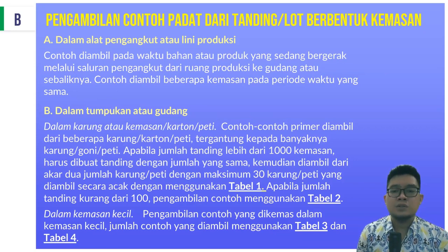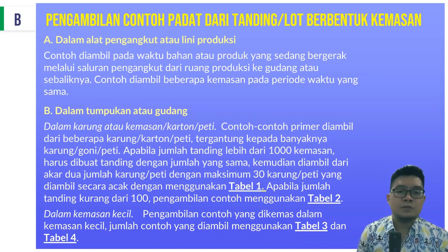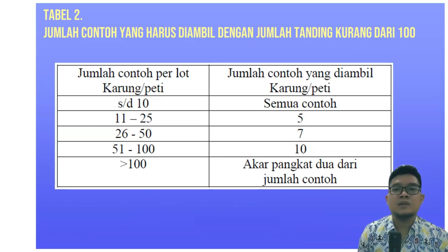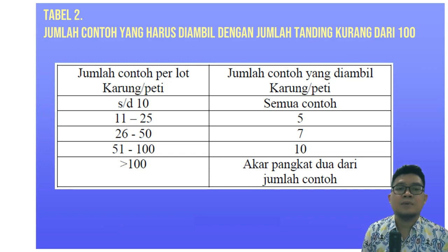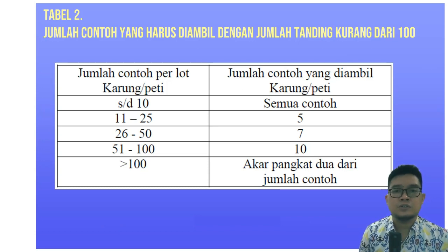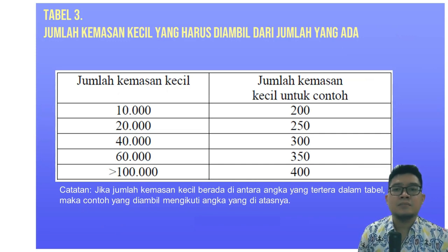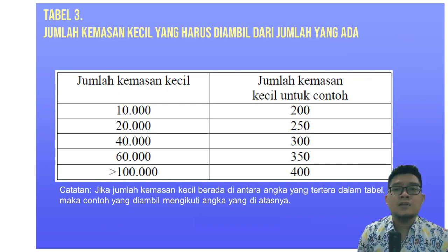Untuk pengambilan contoh yang dikemas dalam kemasan kecil, jumlah contoh yang diambil menggunakan ketentuan yang disajikan pada tabel 3 dan tabel 4. Tabel ini menunjukkan jumlah contoh yang diambil pada karung ataupun peti bila jumlah tandingnya kurang dari 100. Misalnya terdapat 10 peti dalam satu lot, maka seluruh contoh diambil. Namun jika ada 26 karung atau peti, maka yang diambil adalah 7 karung atau peti sebagai contoh. Pada tabel 3, misalnya terdapat 20.000 kemasan kecil, maka jumlah kemasan kecil yang diambil sebagai contoh adalah 250 kemasan.